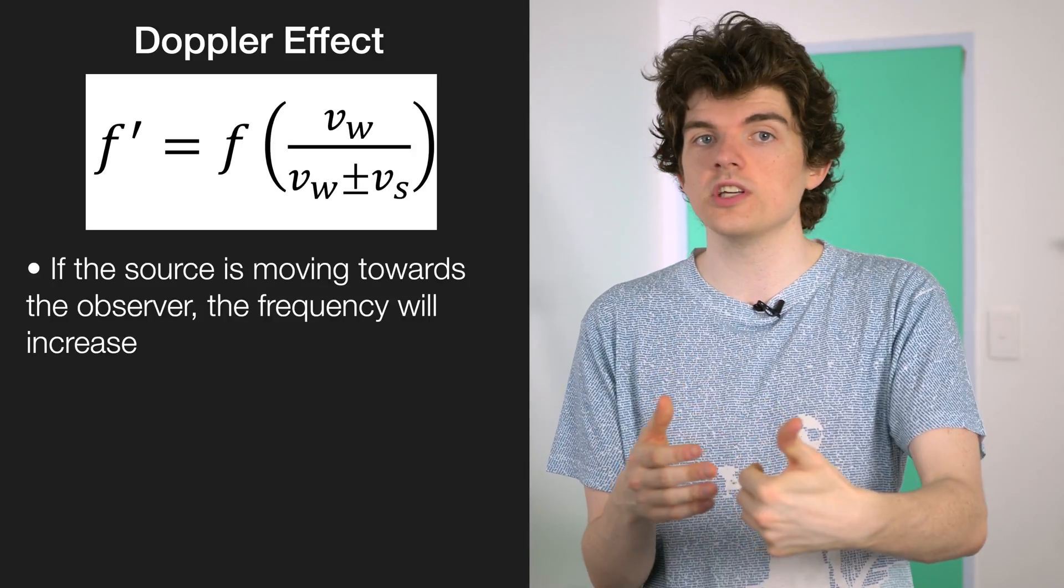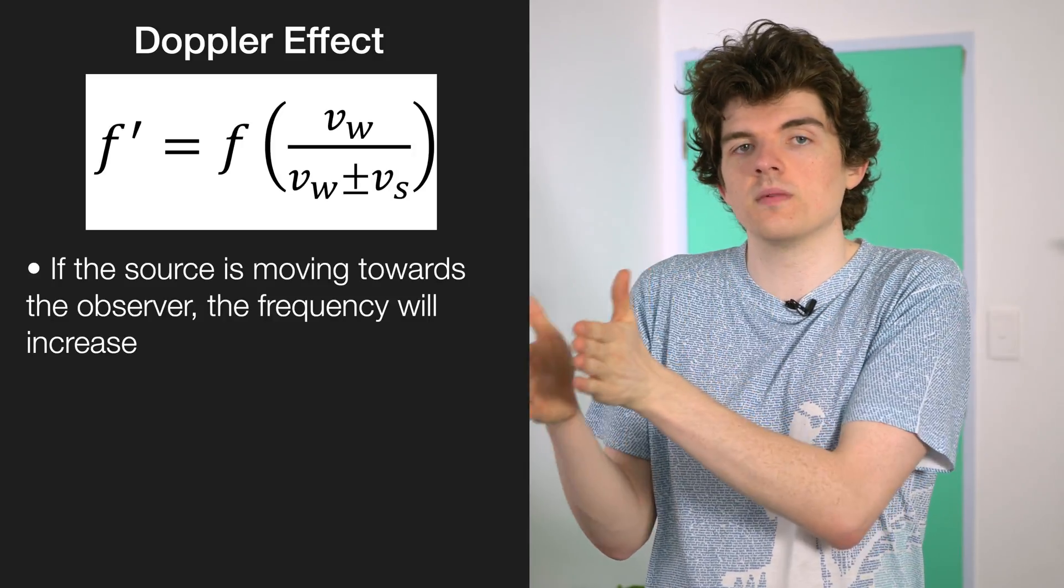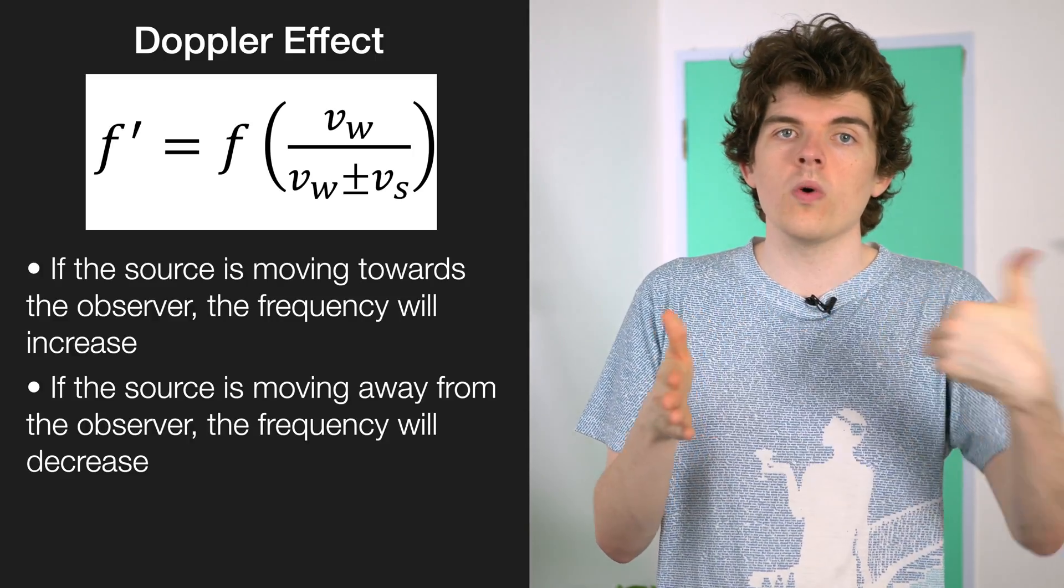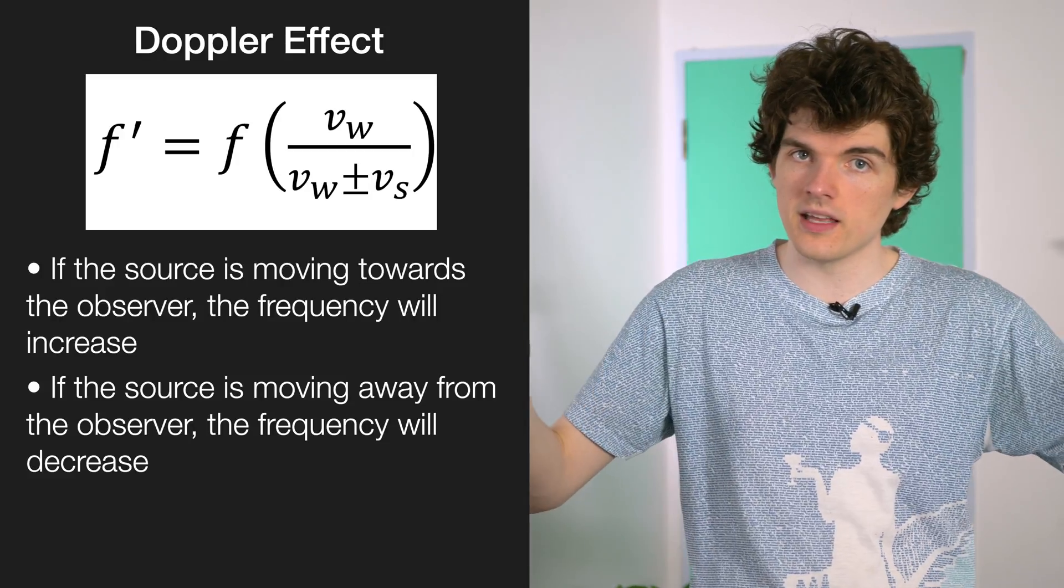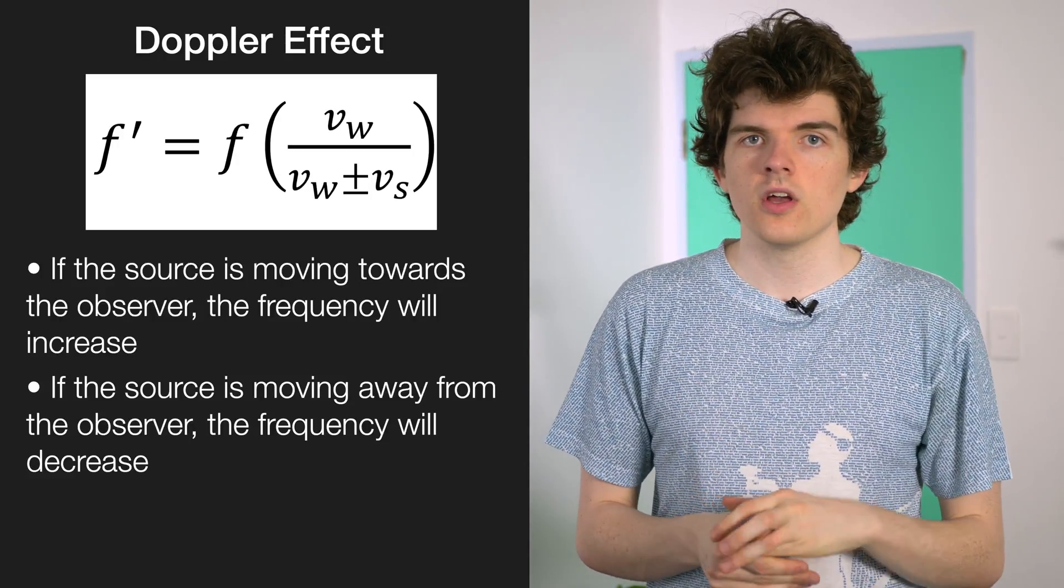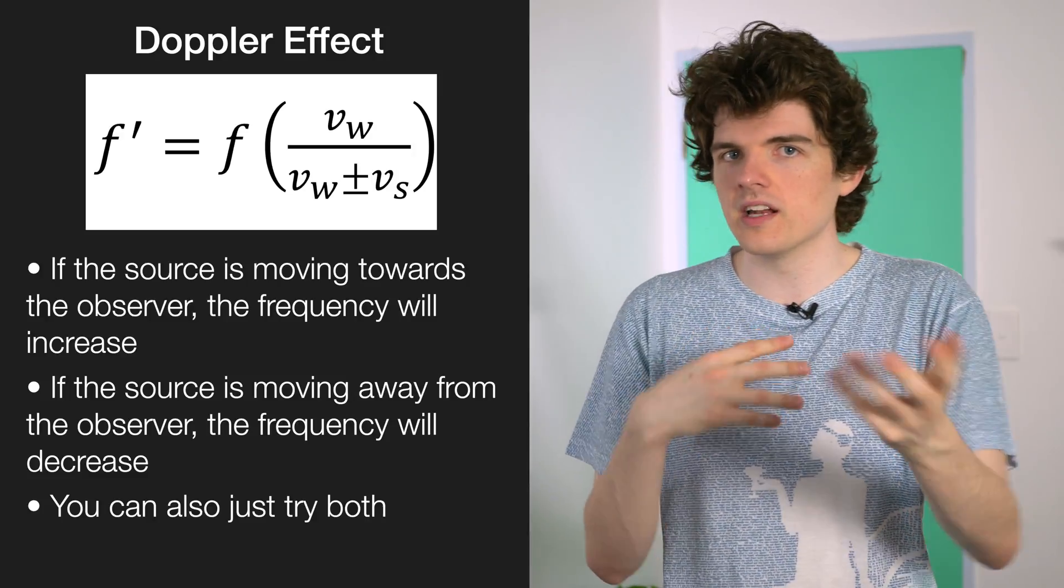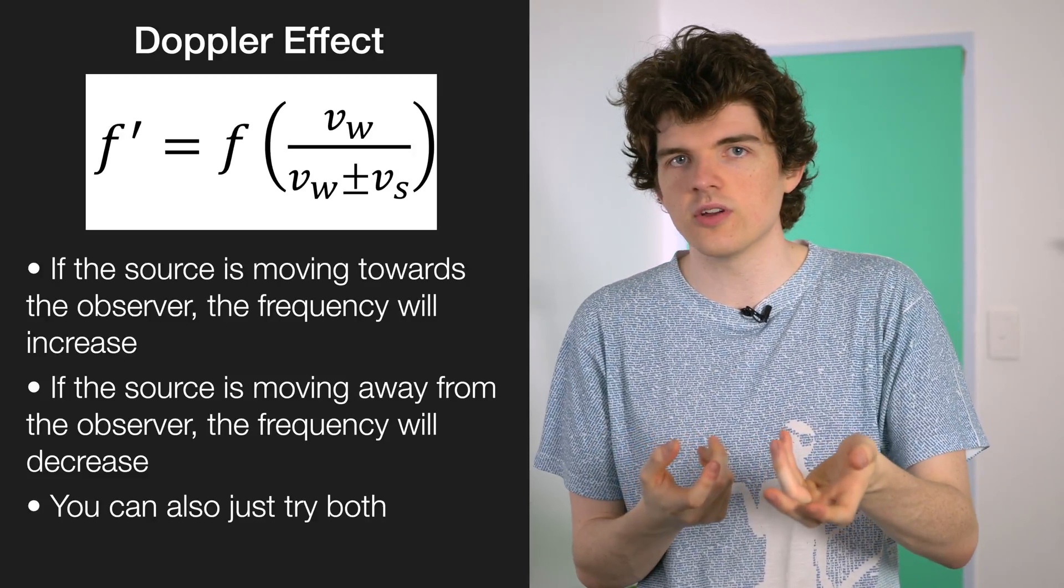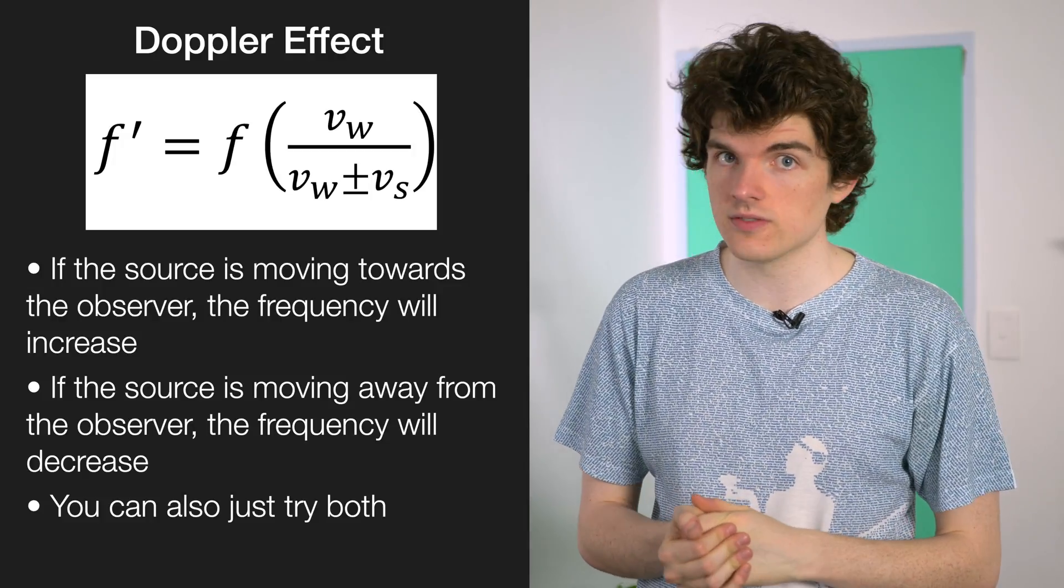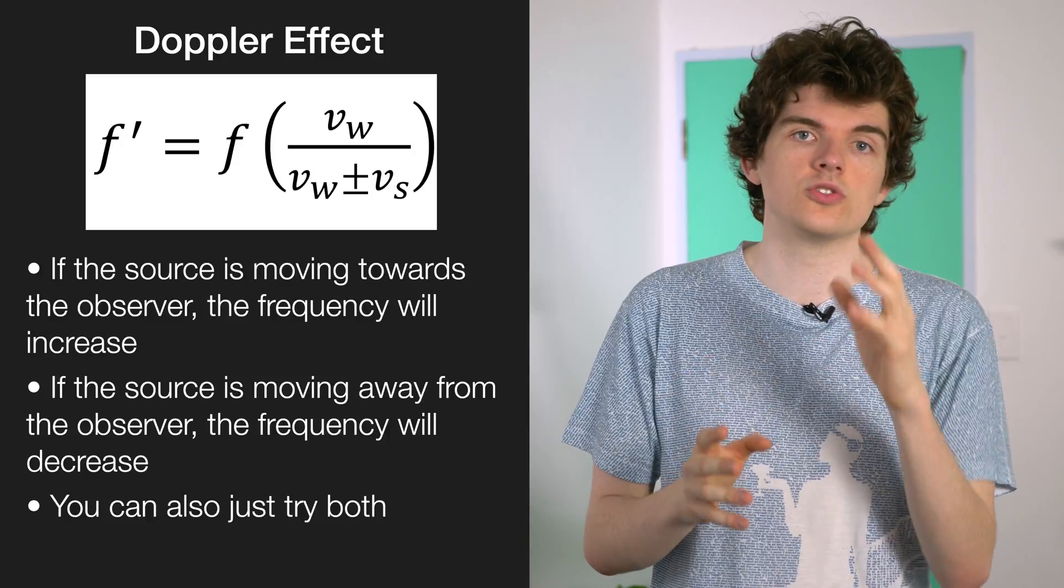If the source is moving towards the observer, the wave fronts are bunched up, so the frequency increases. If the source is moving away, the wave fronts are expanded out, and you'll hear a lower frequency. You can always plug in one with plus and one with minus to see which gives you the correct result if you're not comfortable with that. Also, for explain questions on the Doppler effect, it's always good to draw a diagram.